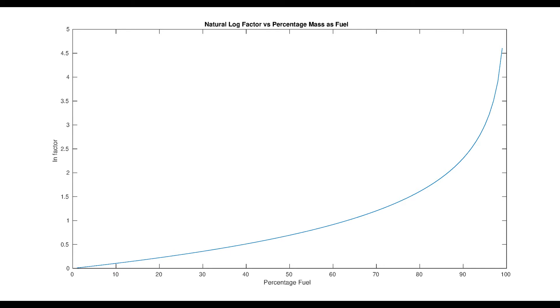Here's a chart of what the natural log factor is for a given percentage fuel of the rocket. This is why rockets are mostly fuel, with very small payloads compared to their launch mass.